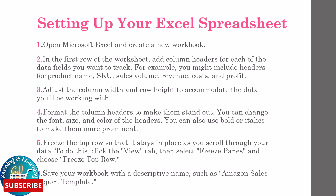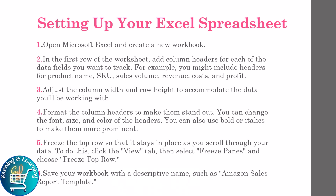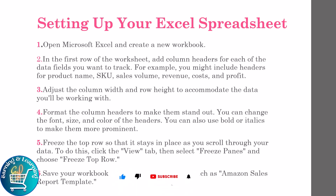Adjust the column width and row height to accommodate the data you will be working with. Format the column headers to make them stand out — you can change the font size and color, and use bold and italic to make them more prominent. Freeze the top row so that it stays in place as you scroll through your data. To do this, click the View tab, then select Freeze Panes and choose Freeze Top Row. Save your workbook with a descriptive name such as Amazon Sales Report Template.